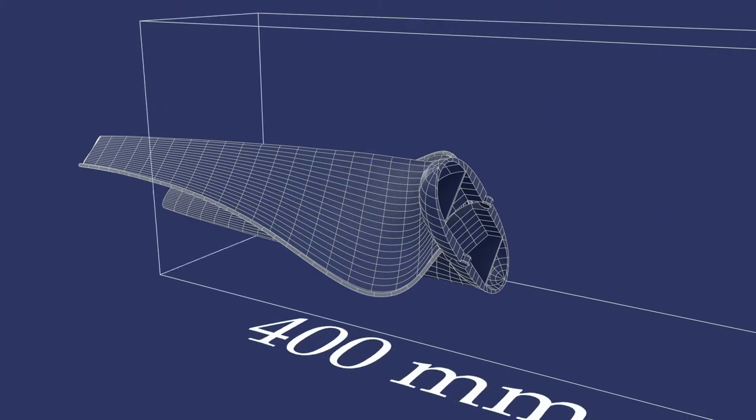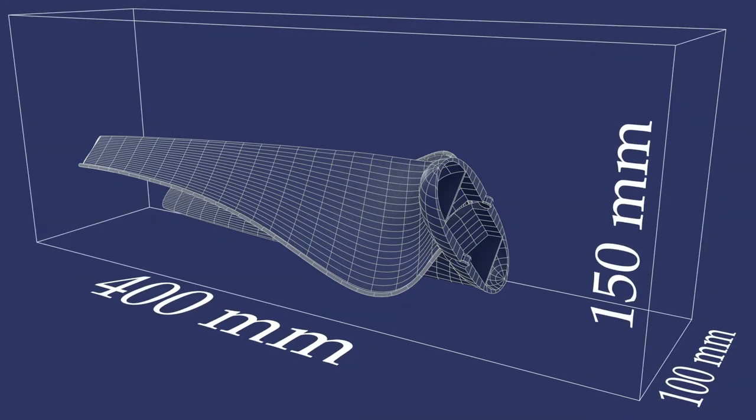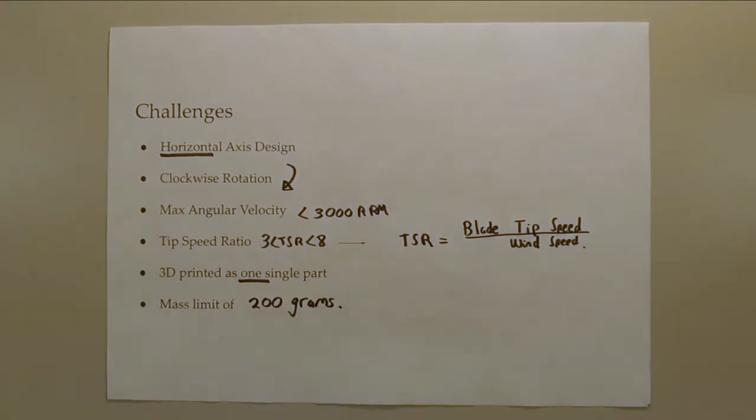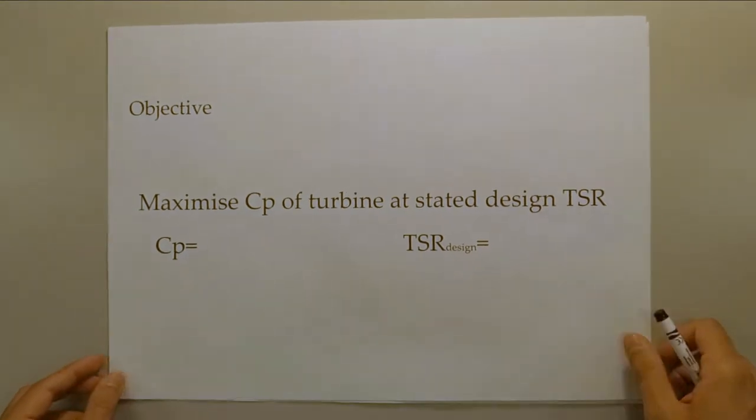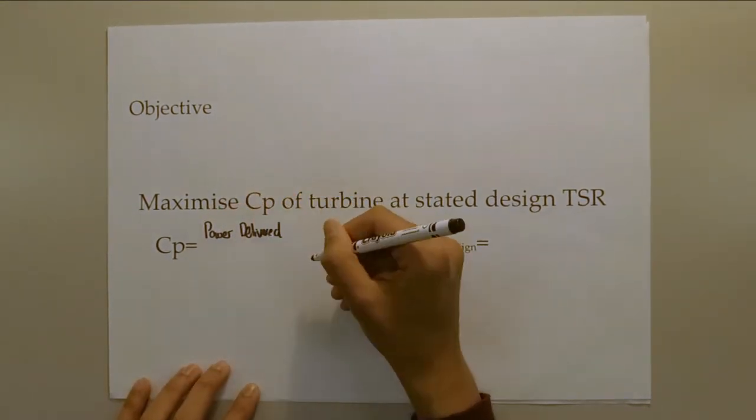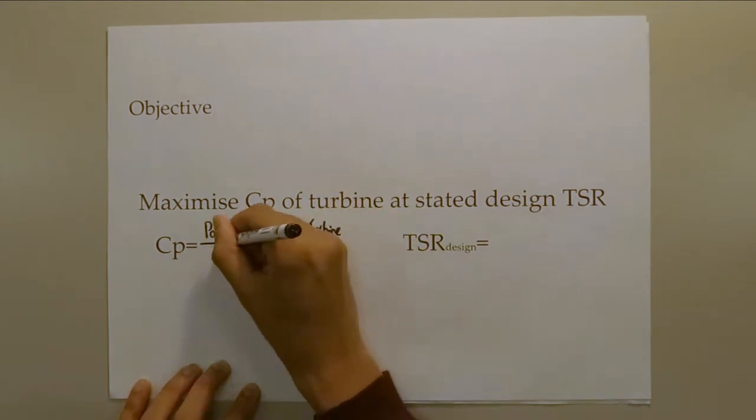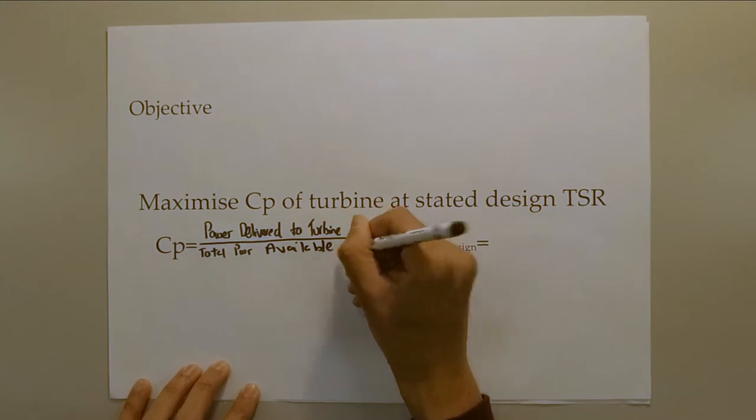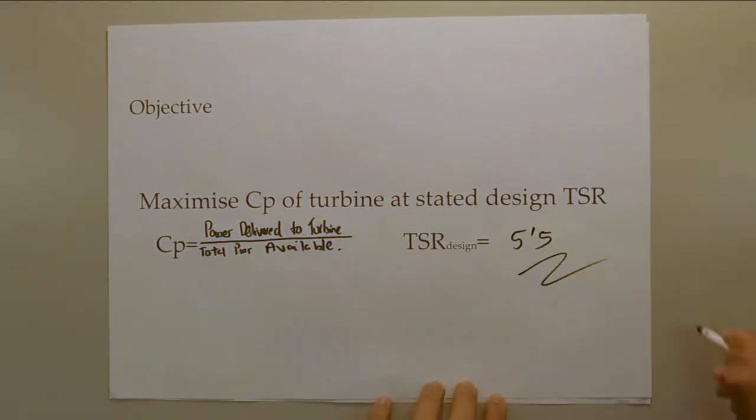The box had a length of 400mm, depth of 100mm, and height of 150mm. In addition, a mass limit of 200g has been imposed. Our objective was to maximize the power coefficient of the turbine, defined as the ratio of the power delivered to the turbine to the total power available in the flow passing through the swept area of the blades at a stated design TSR of 5.5.